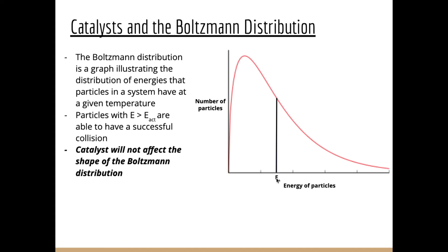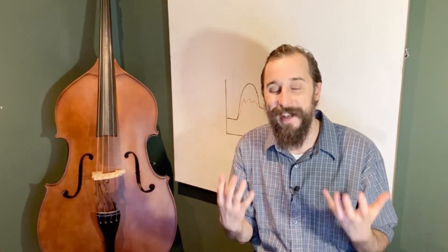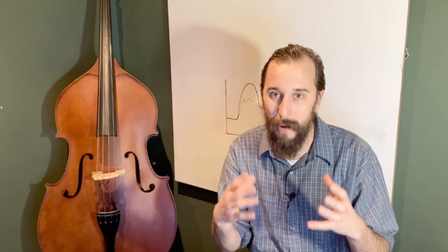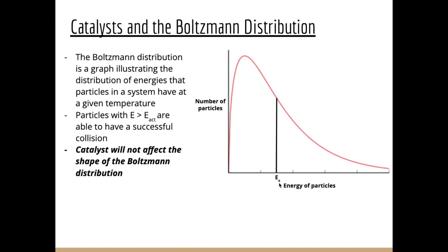Catalysts increase the rate of reaction, but they don't affect the shape of the Boltzmann distribution — as opposed to temperature, which shifts and changes the shape of the distribution. In the case of the catalyst, the Boltzmann distribution stays the exact same shape. What happens — similar to what we see on the enthalpy profile diagram — is we reduce the activation energy. The catalyst isn't changing the energy of the particles at all, so all the particles have the exact same distribution. What changes is the activation energy is decreased.